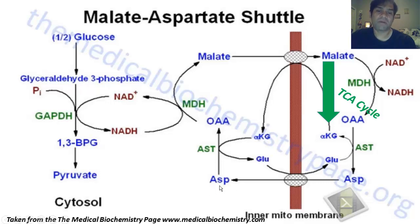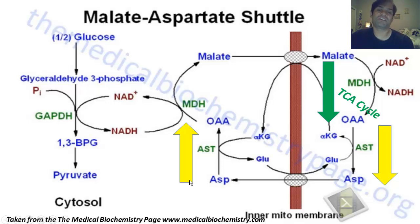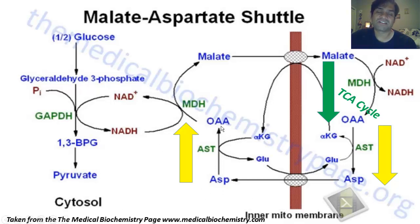Here, aspartate gets converted back to its corresponding alpha-keto acid. So we have transamination occurring in opposite directions — the AST transaminase runs in one direction in the mitochondrial matrix, while in the cytoplasm the cytoplasmic form runs in the reverse direction, converting aspartate to oxaloacetate. In this reverse transamination reaction, aspartate donates its alpha amino group and becomes oxaloacetate.